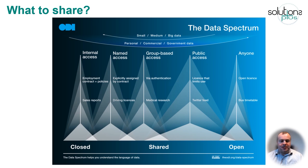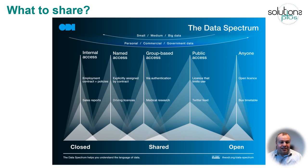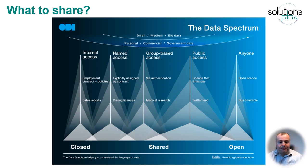Another important consideration around open data and digitalisation is what to share. Not everything is appropriate to be shared with everybody. This chart, produced by the Open Data Initiative, gives a structure of what you might want to make fully open and what you might want to make closed. There are considerations around data protection, privacy, contracts, and commercial sensitivities. Things like bus timetables you can probably make open without any implications. But at the other extreme, if you start making employment contracts open, you'll probably have challenges with your unions and staff.